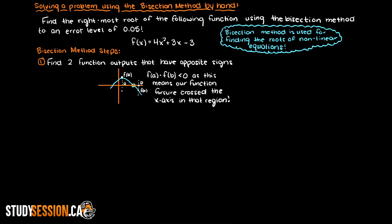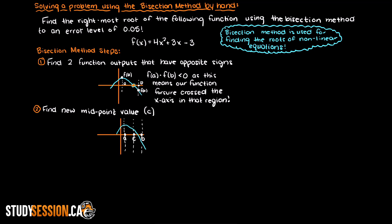Secondly, we must find our new midpoint value, which we commonly call c. This is our input a plus b divided by 2, to give us the input exactly in the middle of a and b. And by this we are sectioning — hence bisection — off half of our graph.